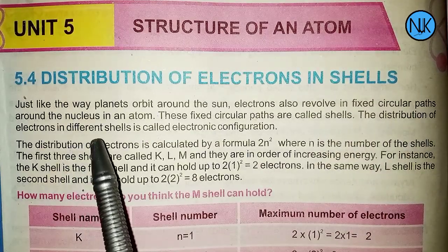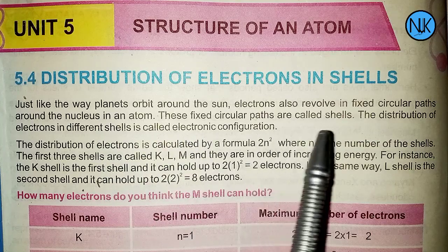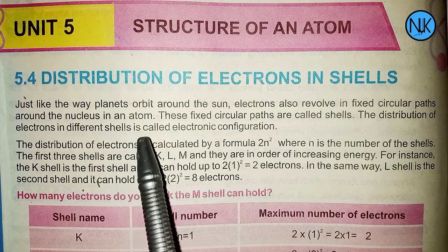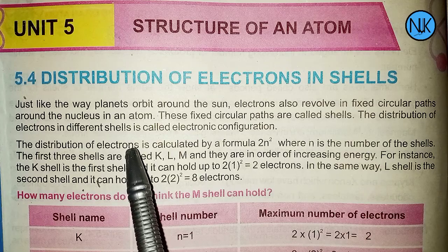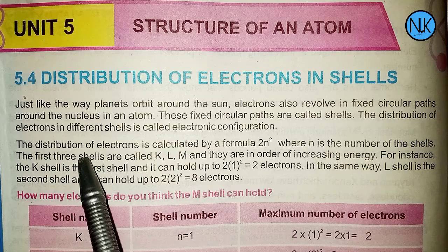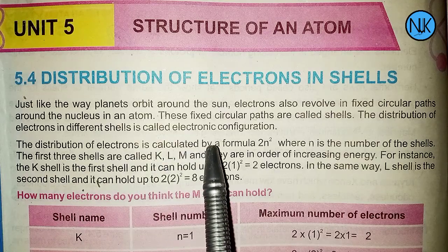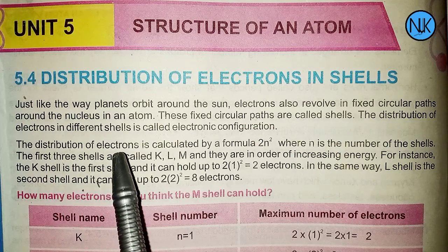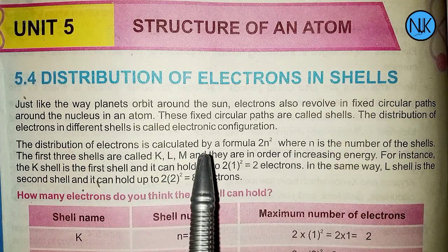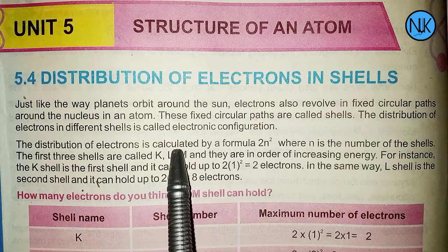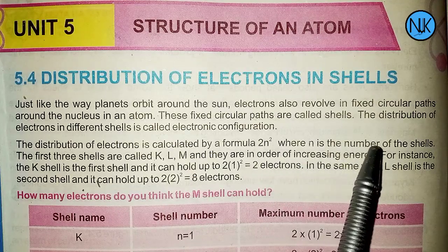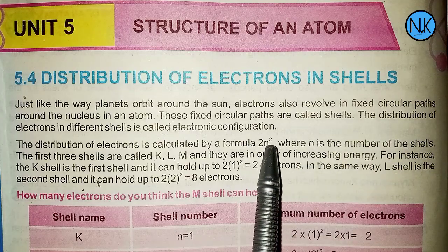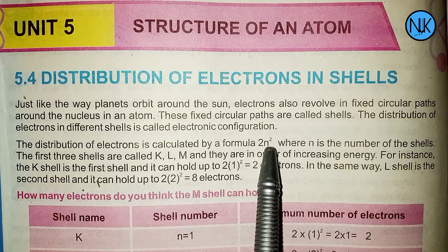The distribution of electrons in different shells is called electronic configuration. The distribution of electrons is calculated by the formula 2n squared, where n is the number of the shell.